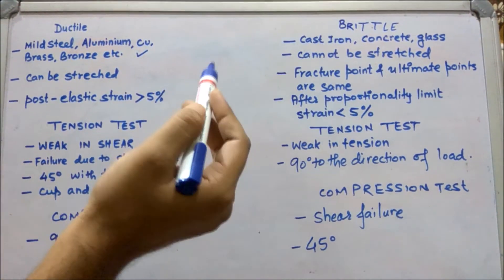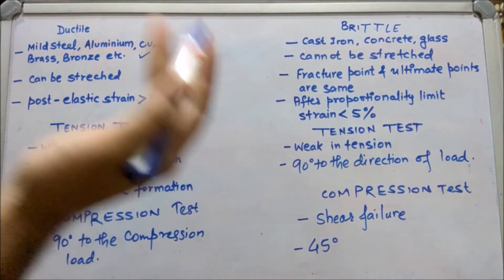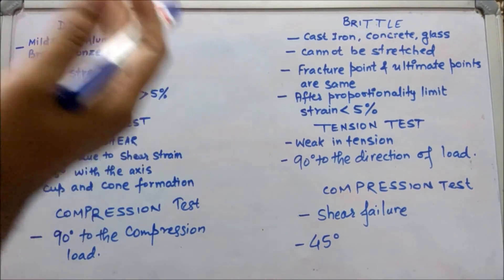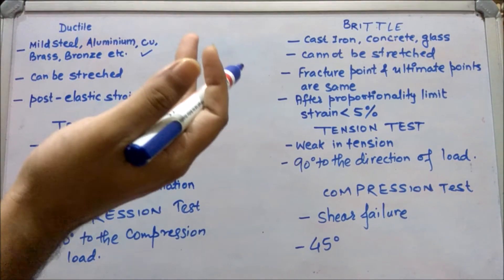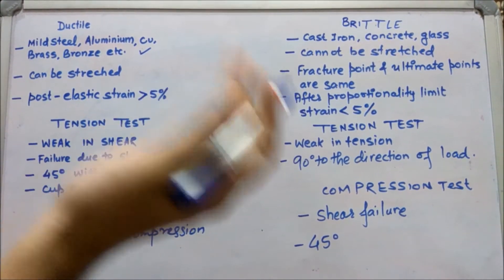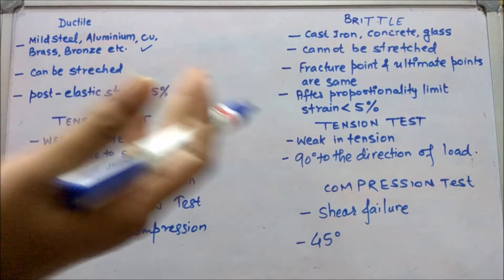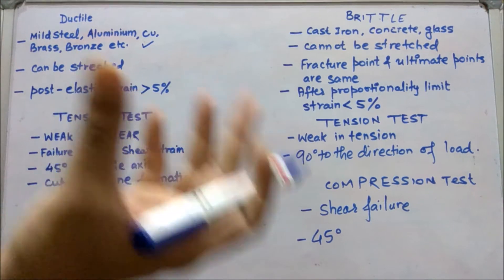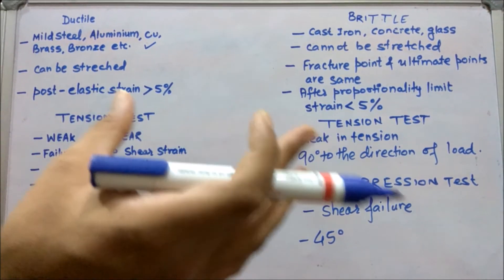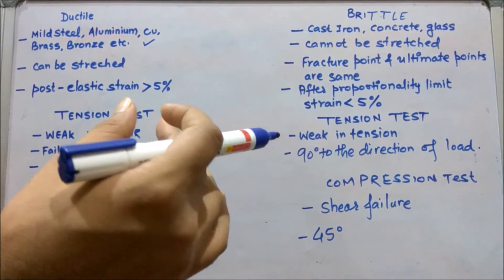In brittle materials, we have the famous examples of cast iron, concrete, and glass. One more example can be the chalk that we use in lecture halls.